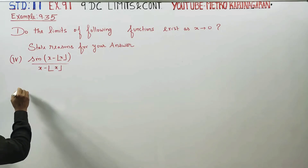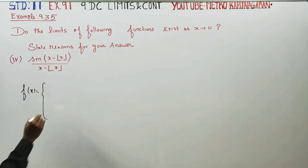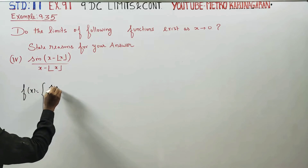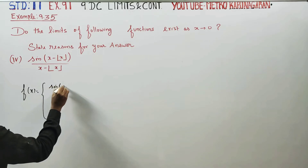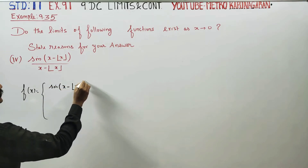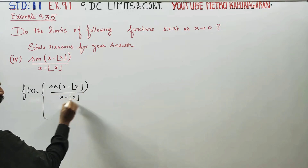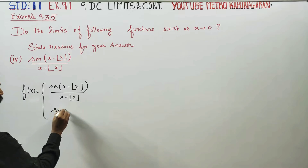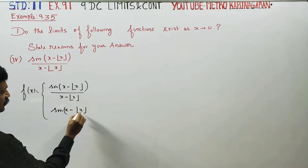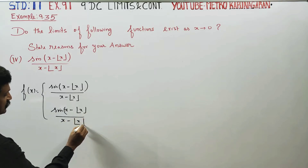First, in the function we have redefined, f of x is equal to: sin of x minus greatest integer function of x, divided by x minus greatest integer function of x.